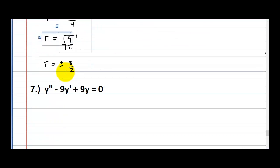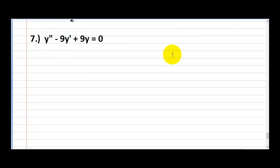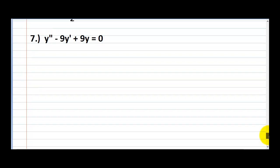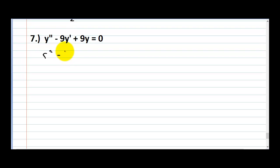Let's go on to number 7. We have y double-prime minus 9y prime plus 9y is equal to zero. Putting this into characteristic form gives r squared minus 9r plus 9 equals zero. It's a bit of a pain to factor this, so we're just going to pop it straight into the quadratic formula.